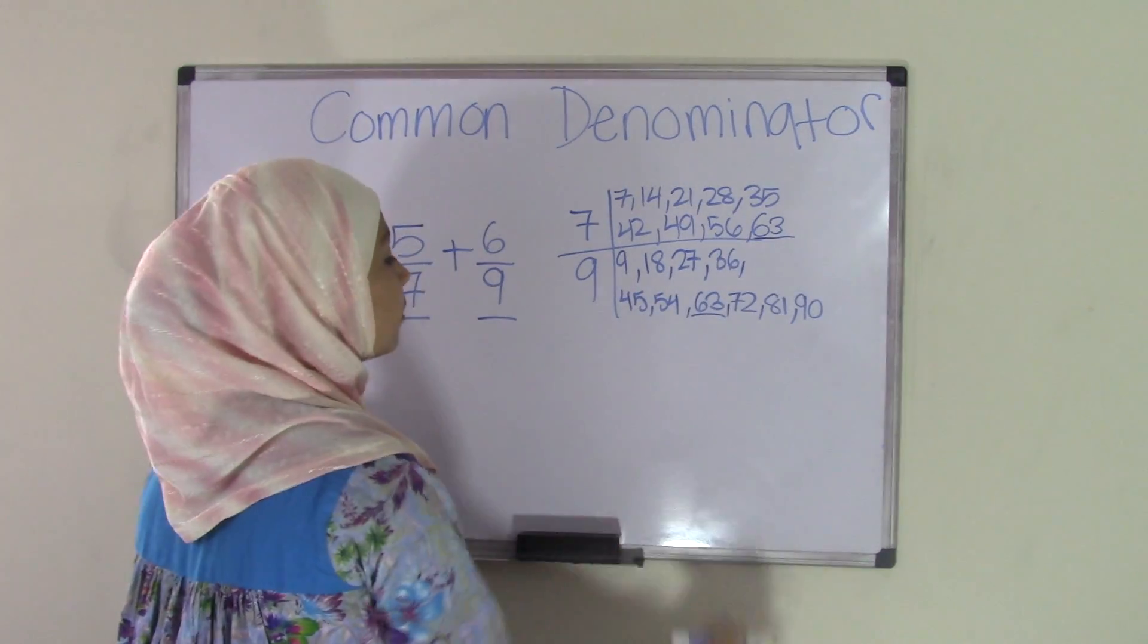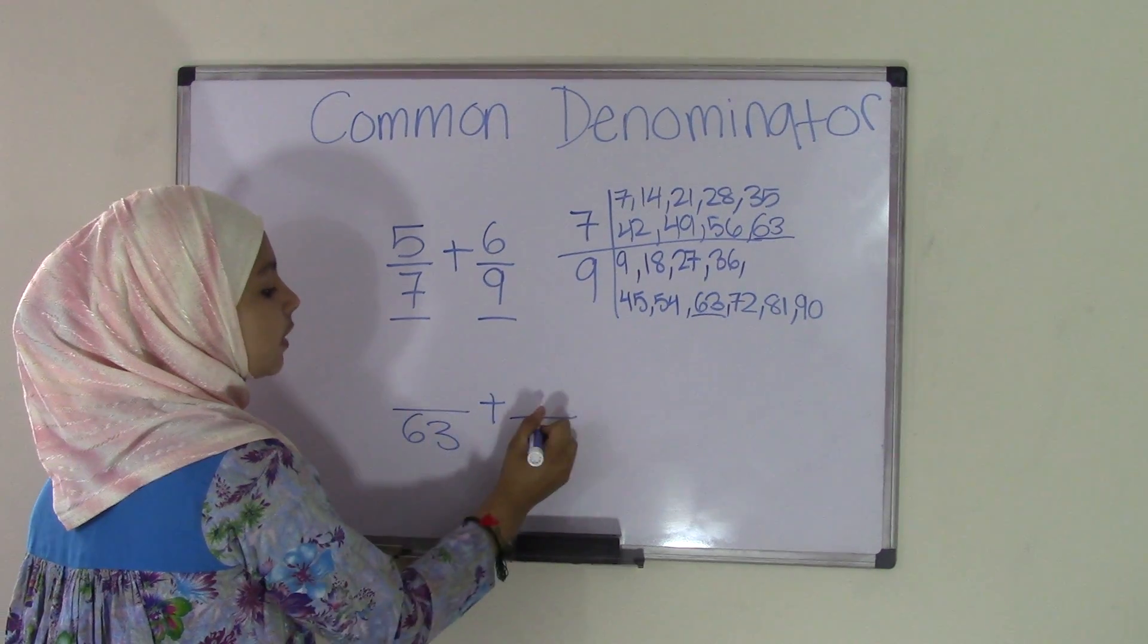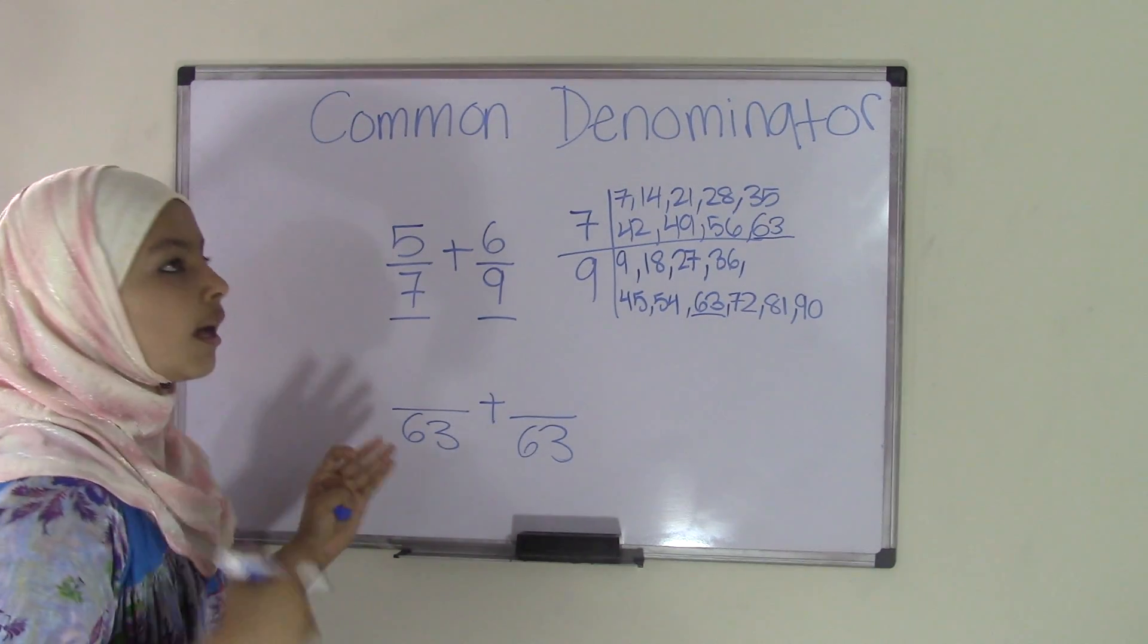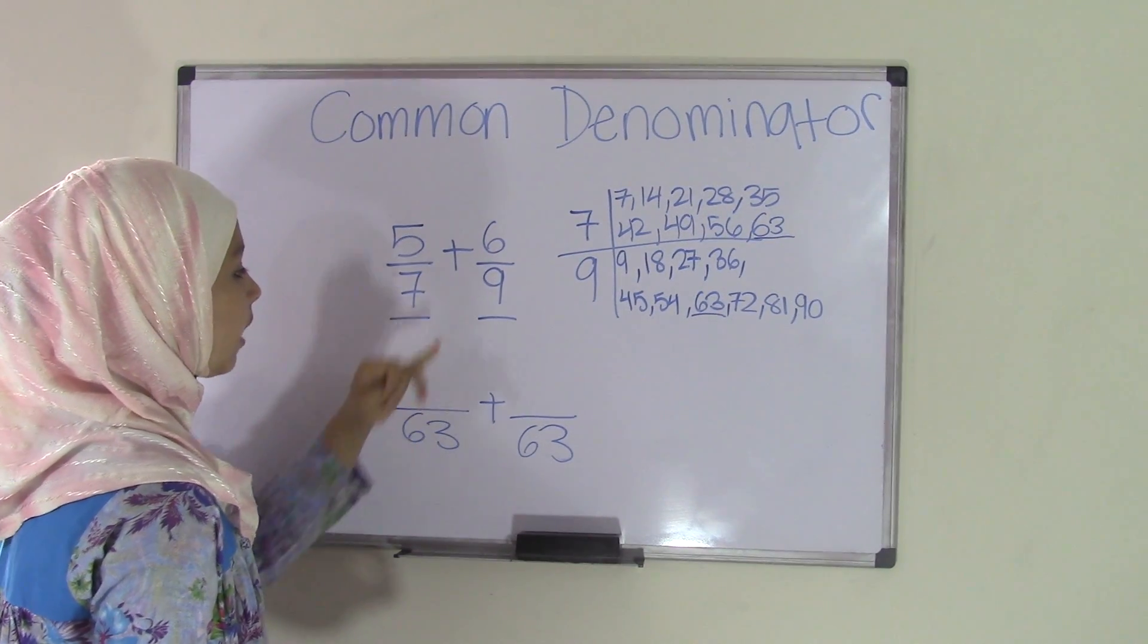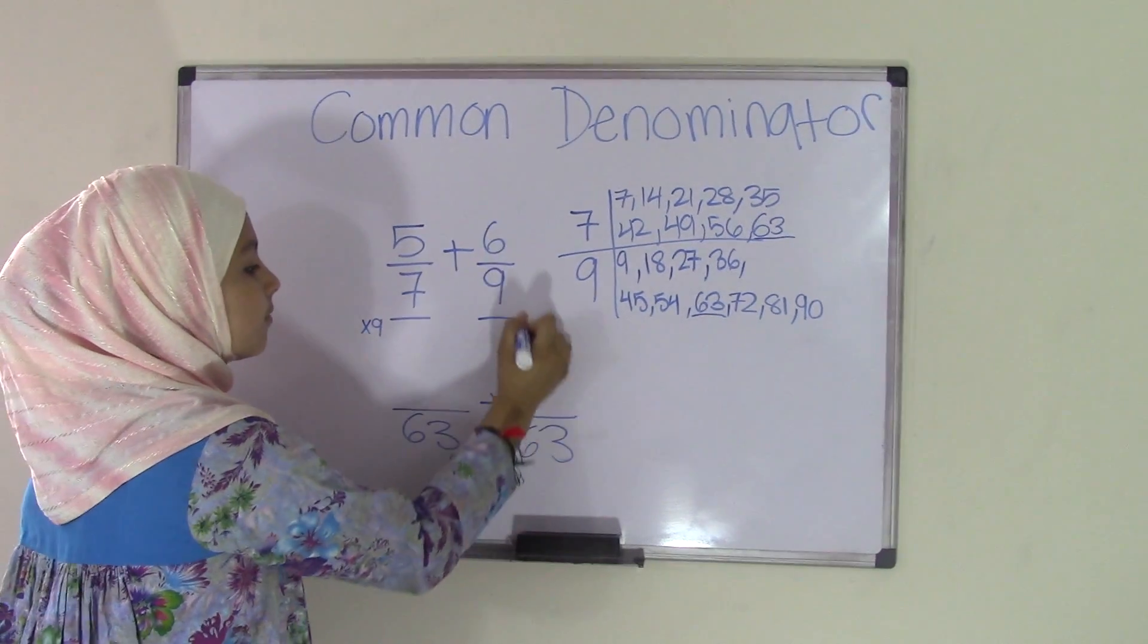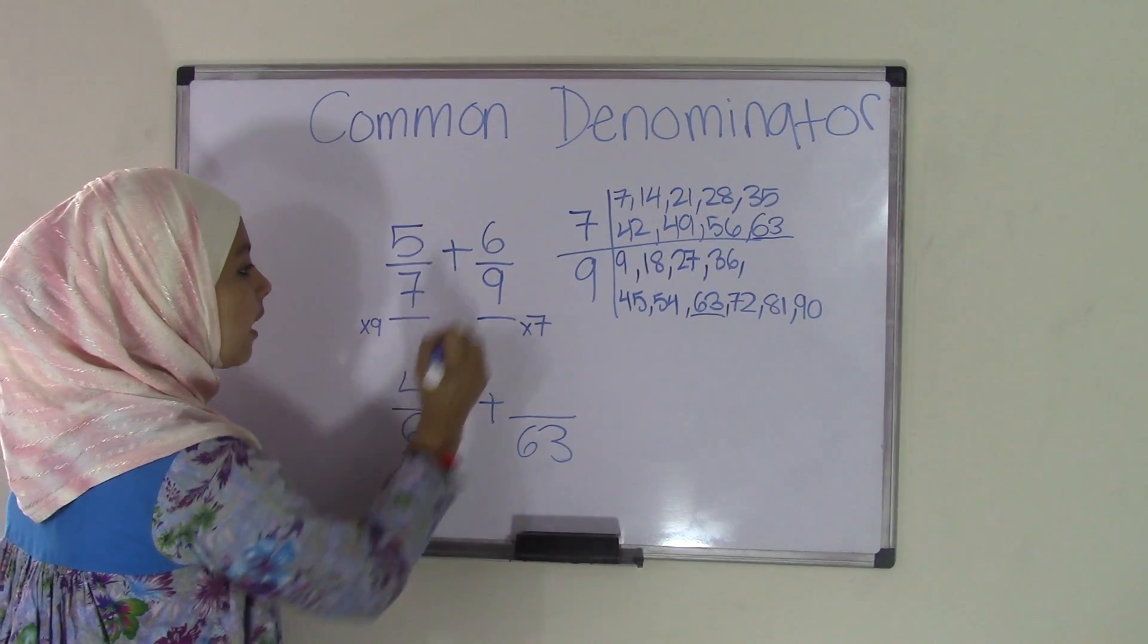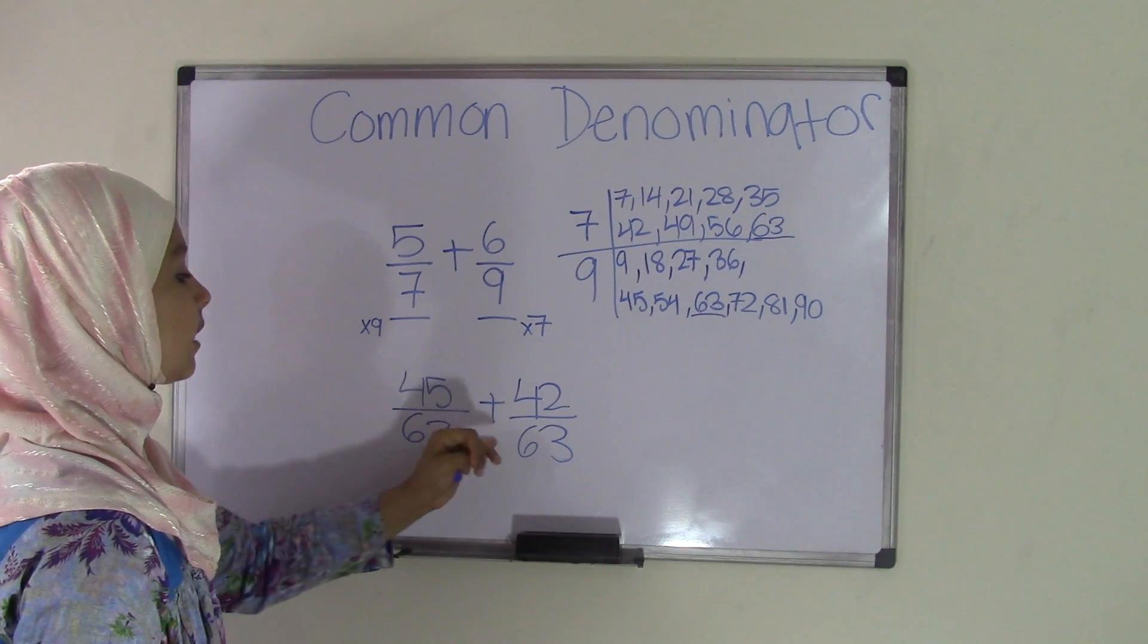So now that I've found a common multiple, I'm going to go back to this fraction problem and write 63 as the denominators. I've left the numerators blank for now. Why? Because you can't just take 5 and 6 because that would change the problem since 5/7 and 5/63 are two different fractions. So you're going to see what times 7 gives you 63 and what times 9 gives you 63. We know that 7 times 9 gives us 63 and 9 times 7 gives us 63. Take these numbers and multiply them by the numerator. So 5 times 9 is 45 and 6 times 7 is 42. Our new fractions are now 45/63 plus 42/63.